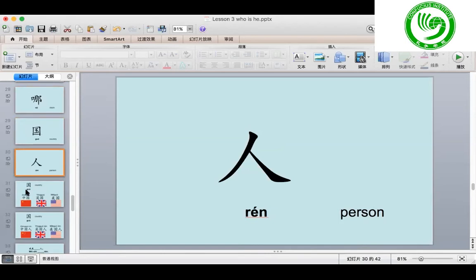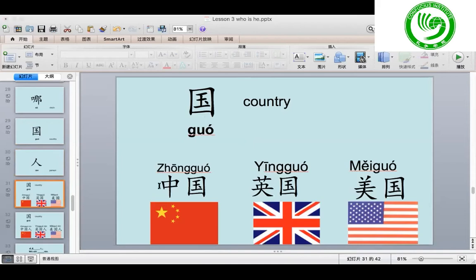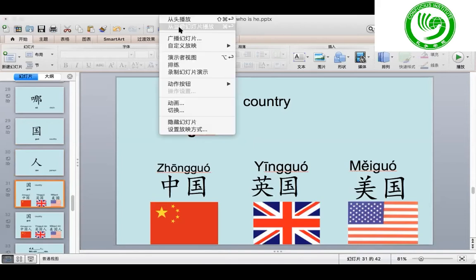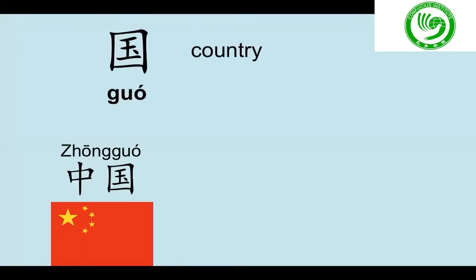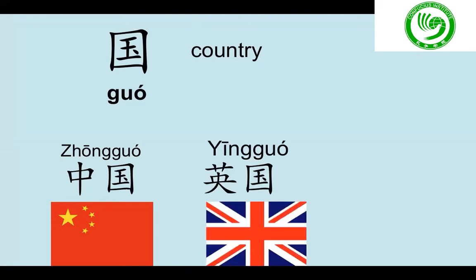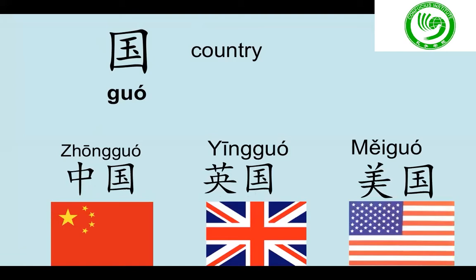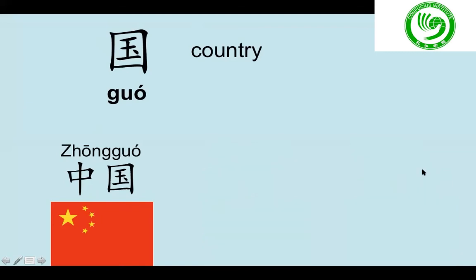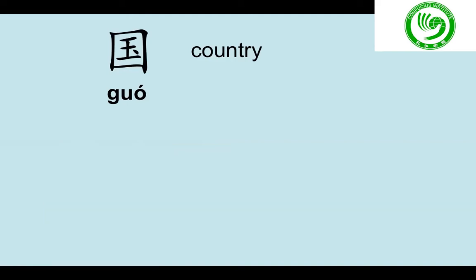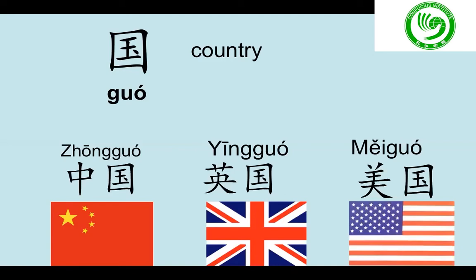国 means 'country'. Then how to say China? It is 中国. 中国. How to say the United Kingdom? 英国. 英国. One more time: China is 中国, and United Kingdom is 英国. Then how to say United States? It is 美国. Follow me, 跟我读: 中国, 英国, 美国.